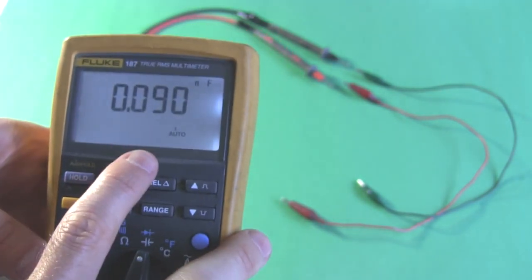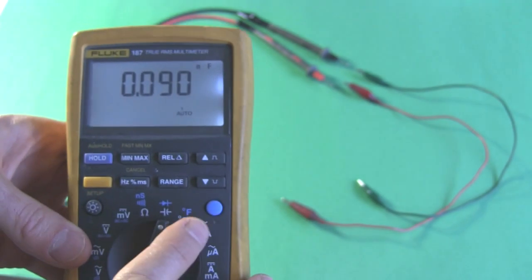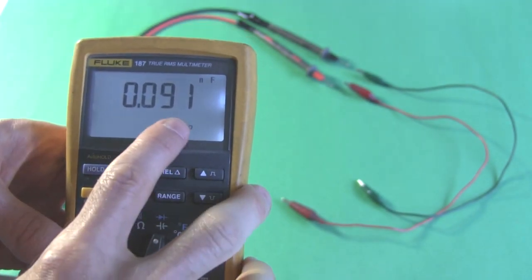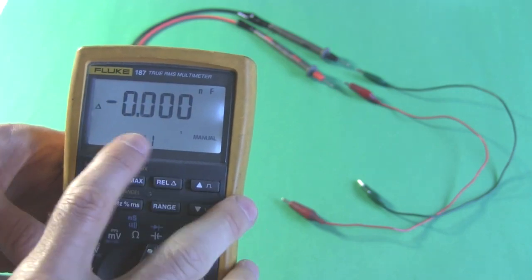And you can see right now it's already reading some capacitance, and that's the capacitance of the probes. So when you make your measurement, you want to subtract that value from your measurement, or this meter has a rel button which I can push. That zeroes it out.